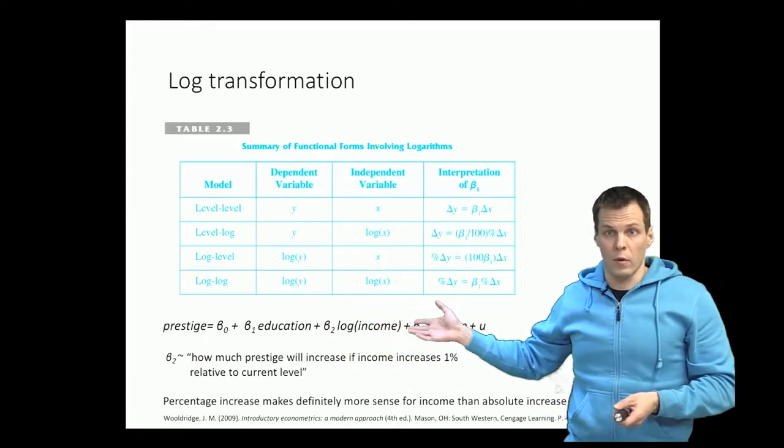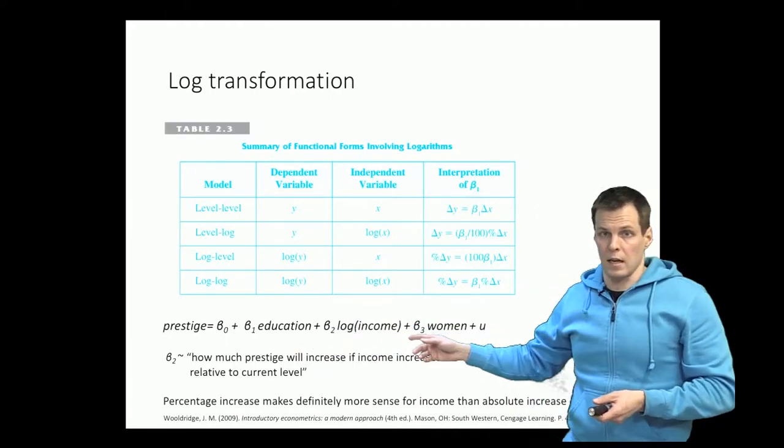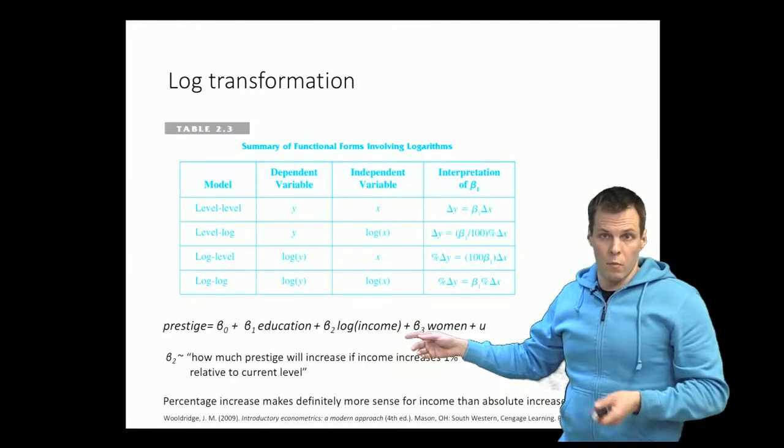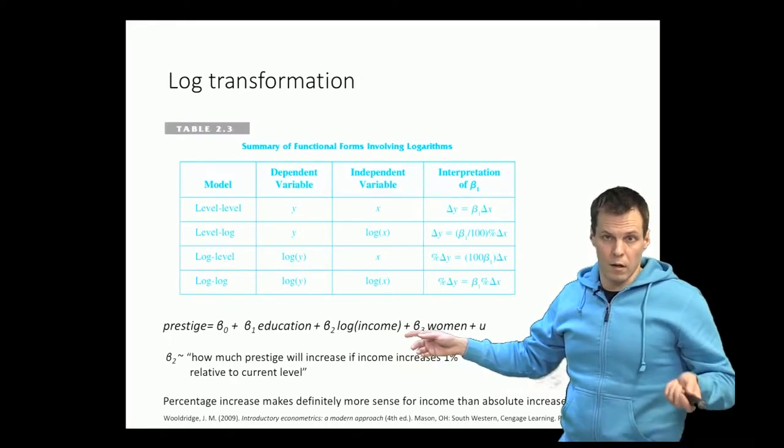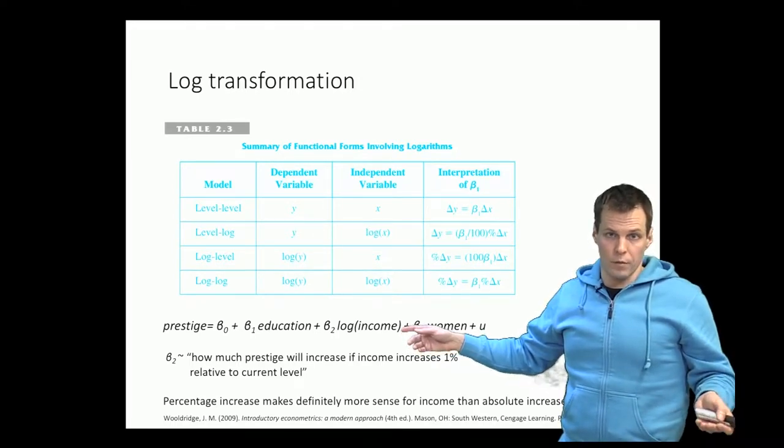We can also do the other way around. So if we have log of income as the dependent variable and prestige as the independent variable, then the interpretation would be how much income increases relative to the current level when prestige increases by one point.